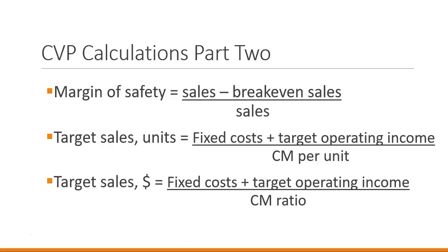Now let's look at our second set of calculations. Margin of safety is an indication of how much buffer sales we have — how much extra sales we have beyond our breakeven sales level. This is calculated as sales minus breakeven sales, with that difference divided by sales.